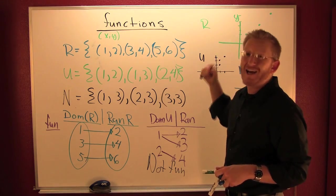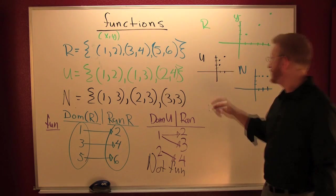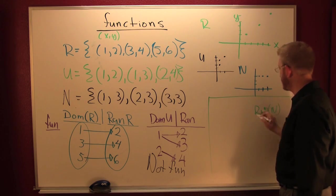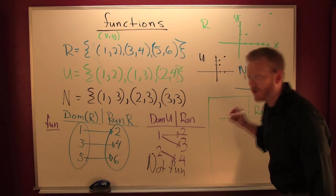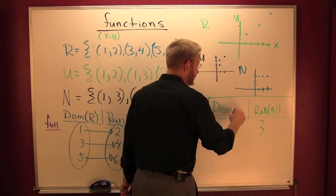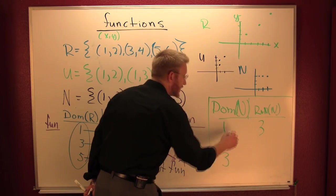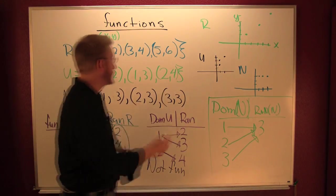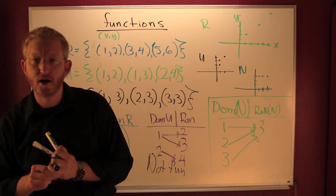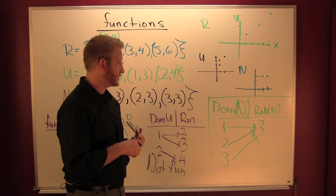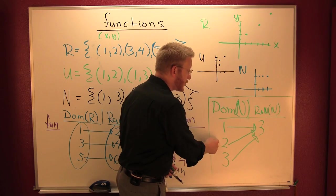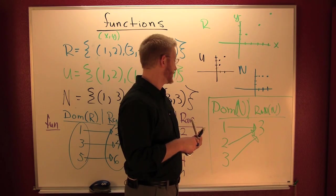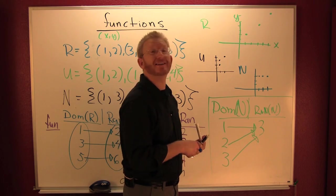Let's check whether or not N is a function. A function is a relation whose first component corresponds to exactly one second component. The range has three only. The domain has one, two, and three. One corresponds to three, two corresponds to three, and three goes to three. Each one of those first elements corresponds to exactly one second element, so it is a function.